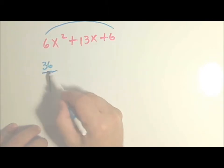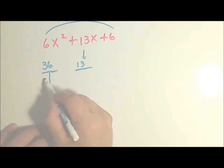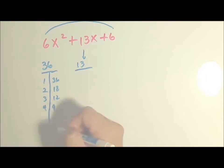We need factors of 36 that add to 13. There's lots of factors of 36. There's 1 and 36, 2 and 18, 3 and 12, 4 and 9, 6 times 6 is 36. There's lots of factors.